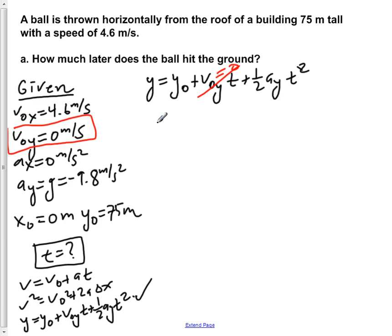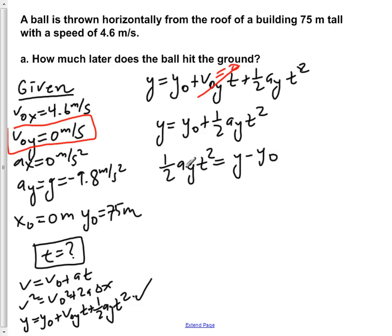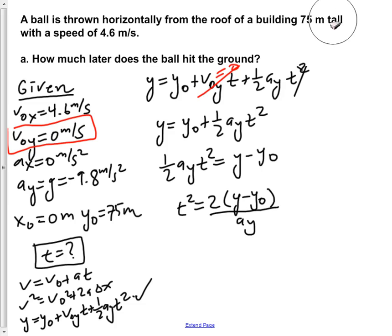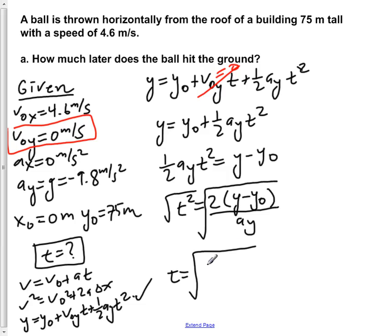With that simplification, we're now left with y equals y0 plus one-half·ay·t squared. To get t alone, we subtract y0 from both sides, giving us one-half·ay·t squared equals y minus y0. Then we multiply by 2 and divide by ay, giving us t squared equals 2 times (y minus y0) over ay. Taking the square root of both sides, we get t equals the square root of 2(y minus y0) all over ay.